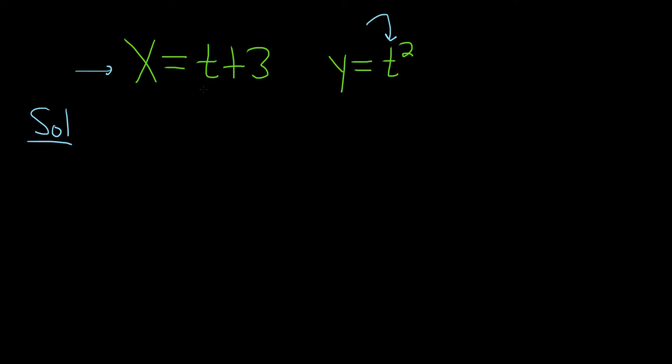So to solve this equation, we'll start by subtracting 3 from both sides, so these cancel. We end up with t equals x minus 3.